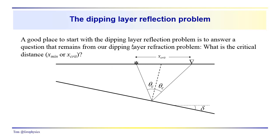We're going to take a look at the dipping layer reflection problem, and our starting point is probably a little different than what you've encountered in most texts. We're going to come back to a characteristic of the critically refracted ray problem for the dipping layer that we didn't address: what is the critical distance? We know that for reflection paths, the angle of incidence equals the angle of reflection, and at the critical angle we begin to see the first critically refracted ray, but we also see a coincident reflection event. The critical distance is the minimum source-receiver distance for the arrival of the first recorded critically refracted ray.